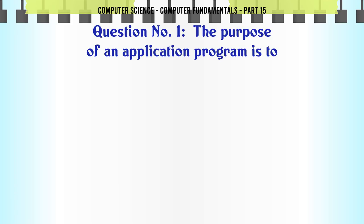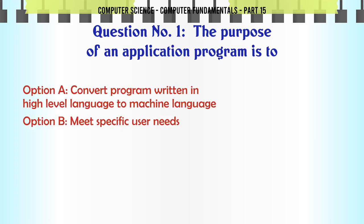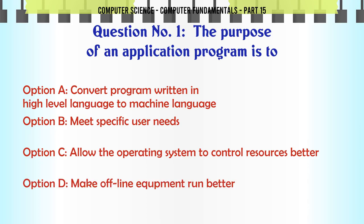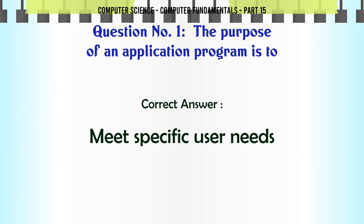The purpose of an application program is to: A. Convert program written in high-level language to machine language. B. Meet specific user needs. C. Allow the operating system to control resources better. D. Make offline equipment run better. The correct answer is Meet specific user needs.